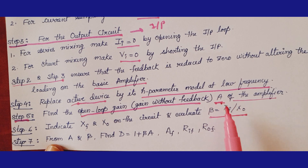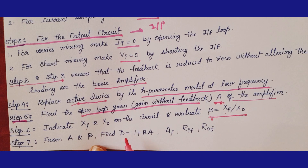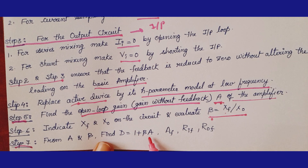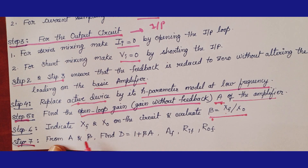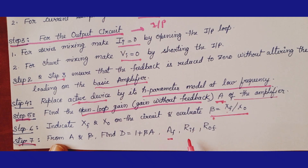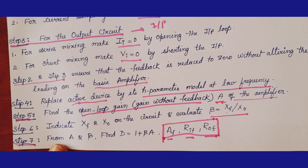Step 7: once you know A and beta, find the desensitivity D = 1 + A·beta. Once you know A, beta, and D, you can find Af, Rif, and Rof — the three parameters of the feedback amplifier.